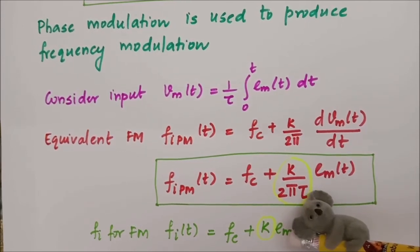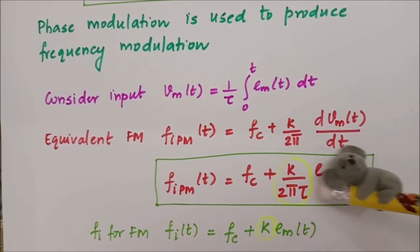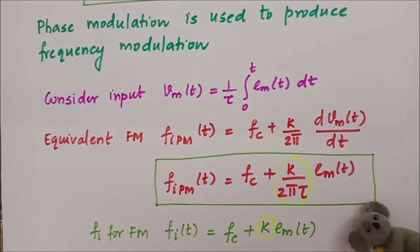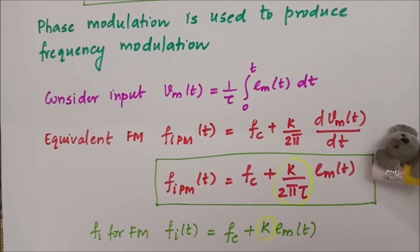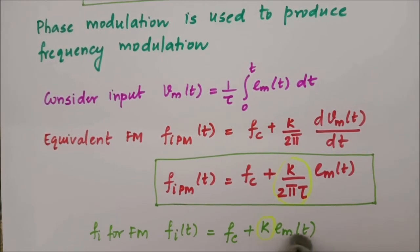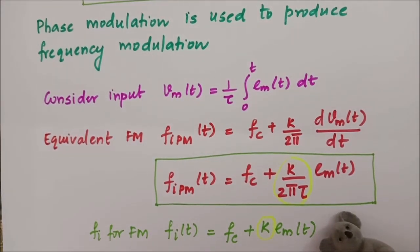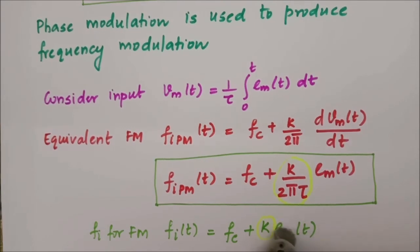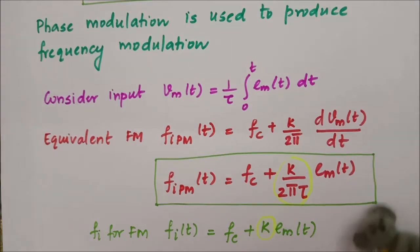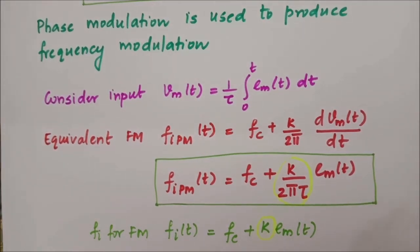Comparing the PM expression fi_PM(t) = fc + (K/2πτ)·em(t) with the FM expression fi(t) = fc + k·em(t), we see they have the same form. The deviation constant k in FM corresponds to K/(2πτ) in phase modulation. This is how FM and PM are related, and this is how we can generate an FM modulated wave using a phase modulator.